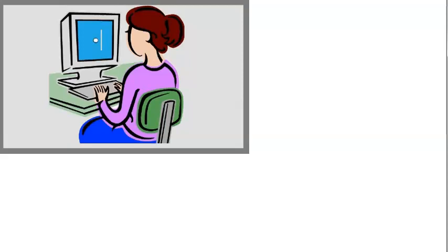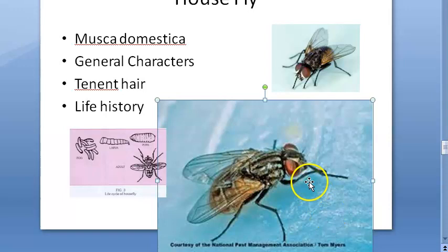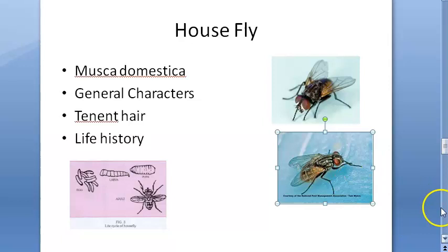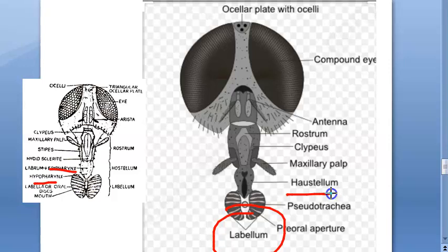The proboscis extends out from the body - you can see the compound eyes, and the proboscis shows the labium and the maxillary palps. You can see the housefly using its proboscis in the photo. Terminally, the proboscis has the labellum and the rostrum.